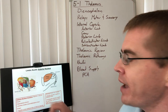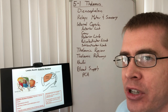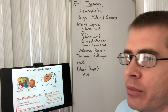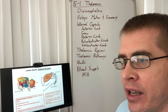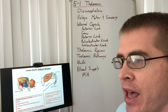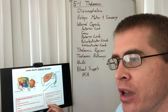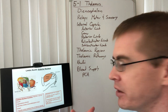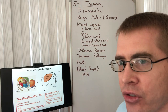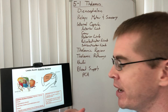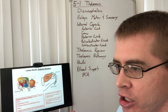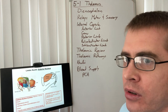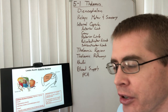What happens when we damage the anterior nucleus? It makes it difficult to maintain focus, and because this region is related to memory, it makes it difficult to remember events. Anterograde amnesia will result from damage to this region.